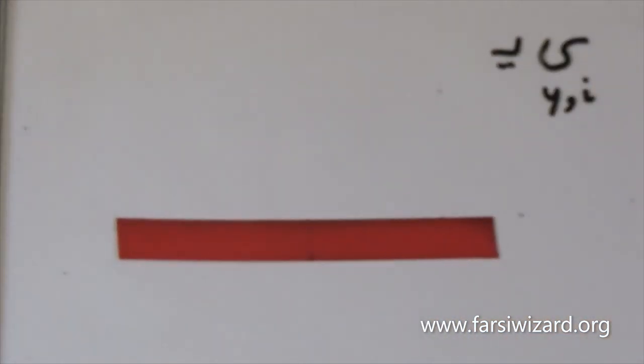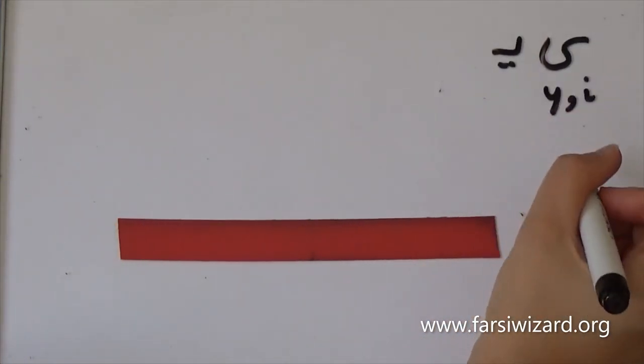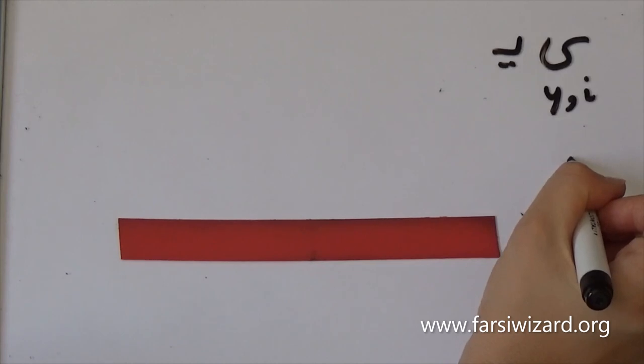Okay, so this letter ye, in fact, is also written in two different forms depending on where in a word it is going to appear. So for example, if we have a word which actually starts with the letter ye, the way it is going to look is going to be different from a word where ye comes at the end.